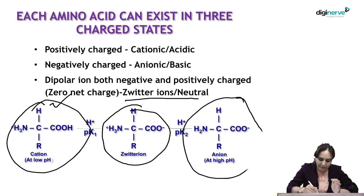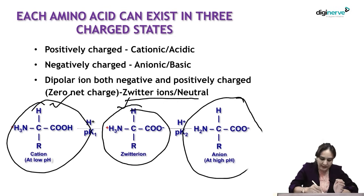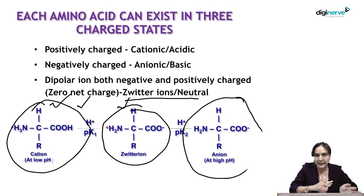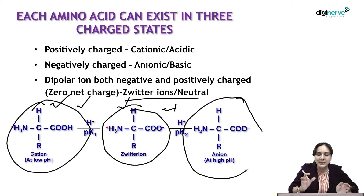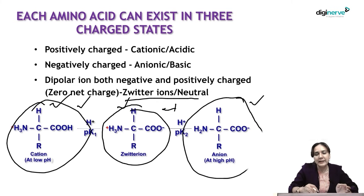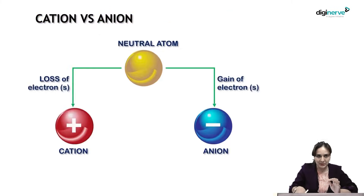If the pH is less than the isoelectric pH, the amino acid will behave as a cation — that is, positively charged. If the pH is greater than the isoelectric point — more basic — the amino acid will act as an anion, that is, negatively charged.